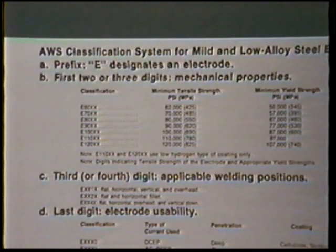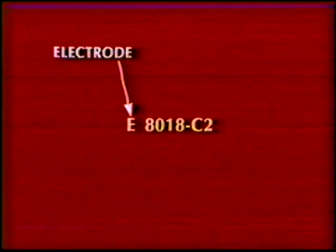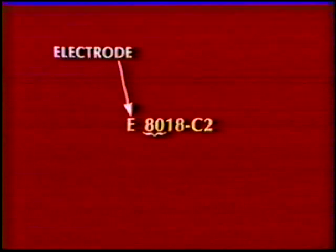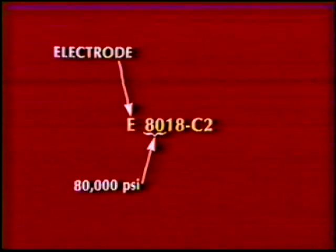In review, if you wish to find out the characteristics of an electrode — for example, E8018C2 — the E means that it is the number for an arc welding electrode. The next two digits, 80, mean that the electrode will deposit a weld with a minimum tensile strength of 80,000 pounds per square inch.